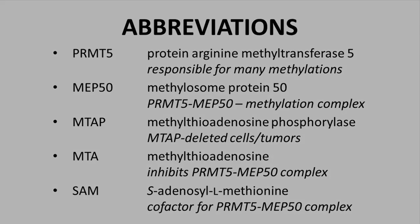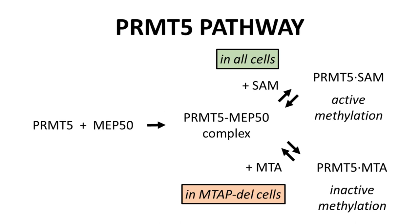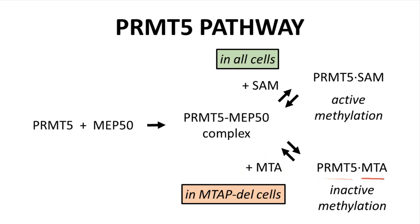Let's diagram the pathway. PRMT5 and MEP50 bind and form the PRMT5-MEP50 complex. This complex can in turn bind the cofactor SAM to form PRMT5-SAM. PRMT5-SAM performs key methylation reactions in cells and is required for proper cellular function. While PRMT5-SAM does bind to SAM, it can also bind to MTA to form PRMT5-MTA. PRMT5-MTA is inactive.